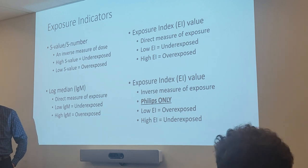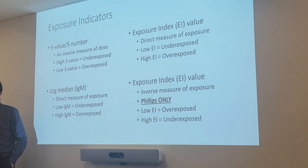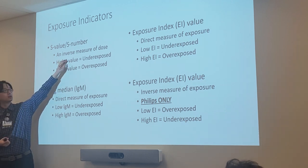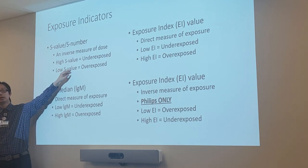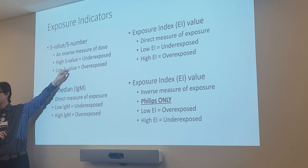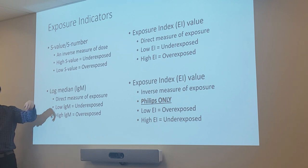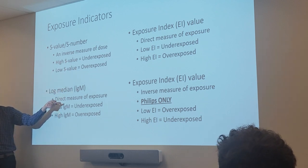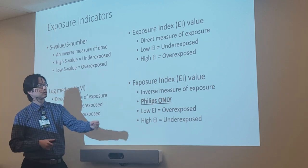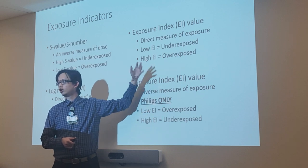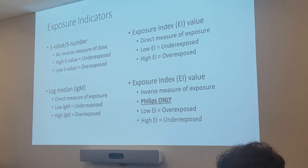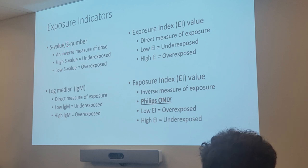How do you fix underexposure? If your SID is supposed to be 72, you don't want to change it. So change your mAs. If you're underexposed, raise your mAs. If you're overexposed, lower your mAs. Anytime you change exposure, first thing to change is mAs. Just remember: inverse means things move opposite directions; direct means things move the same direction. S-value is inverse. Log median is direct. EI can be direct or inverse depending on the company — Phillips is the only one with an inverse EI.